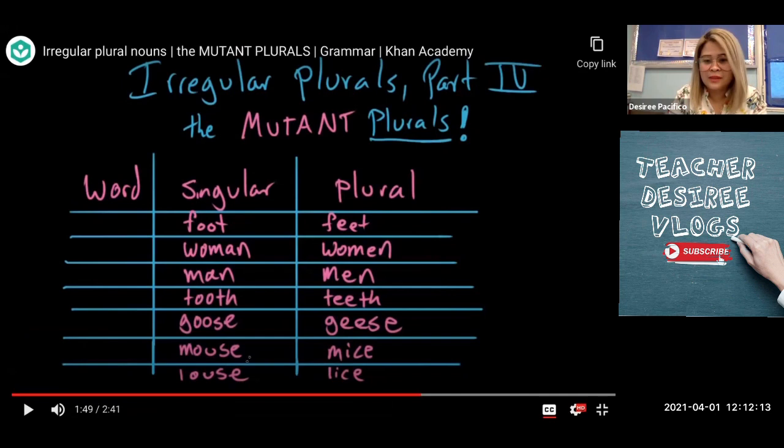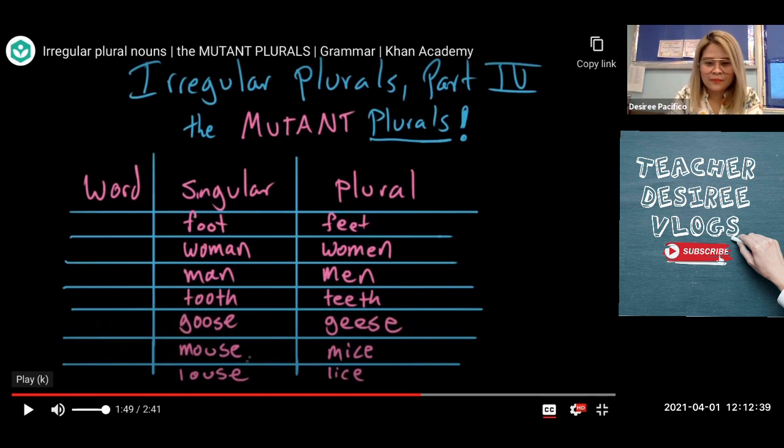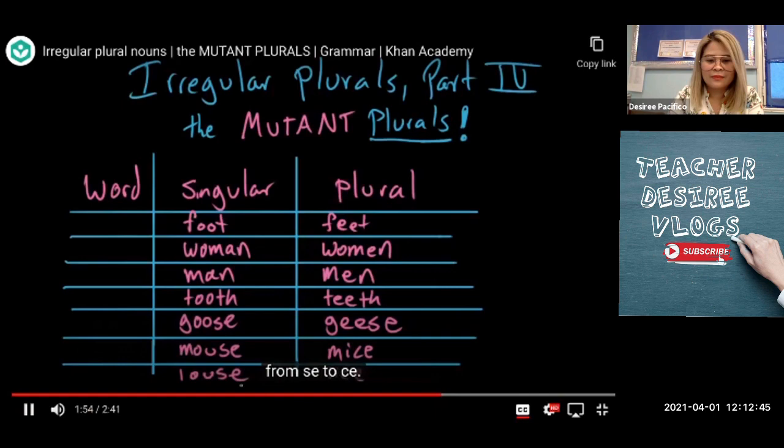Now, which part of the word changes? These three letters — the O-U-S was changed to I and C. Same as with the word louse — the O-U-S from louse was changed to I and C. You can see that mouse and louse actually change their end spelling as well, from S-E to C, even though it's the same sound — louse, lice.